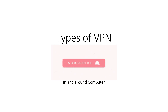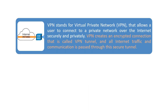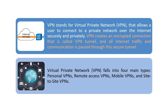In this video we are going to see the types of virtual private networks, or VPN services. VPN allows a user to connect to a private network over the internet securely and privately. It creates an encrypted connection called the VPN channel, and all internet traffic is passed through this secure channel. VPNs fall into four main types: personal VPN, remote access VPN, mobile VPN, and site-to-site VPN.